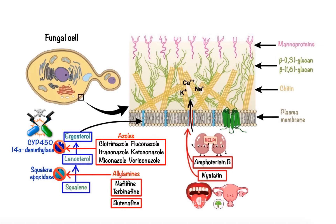In addition to ergosterol, another unique component of the fungal cell wall which also serves as an attractive pharmacological target for antifungal drugs is beta-glucan. Specifically, some antifungal drugs have been designed to target an enzyme located in the fungal plasma membrane that is responsible for the production of beta-1,3-glucans, called beta-1,3-glucan synthase.